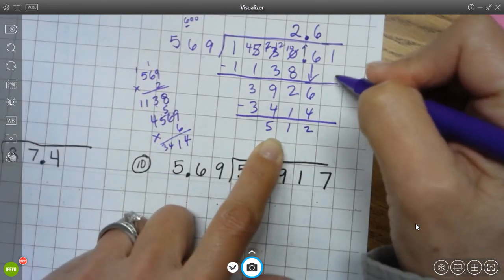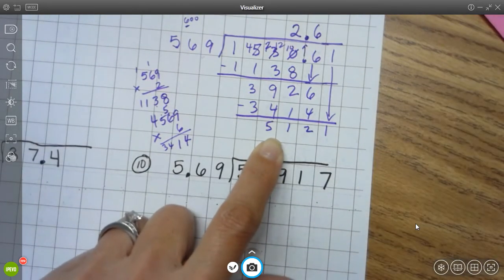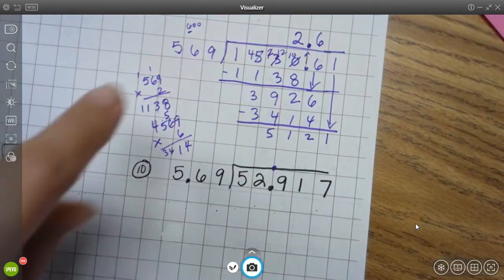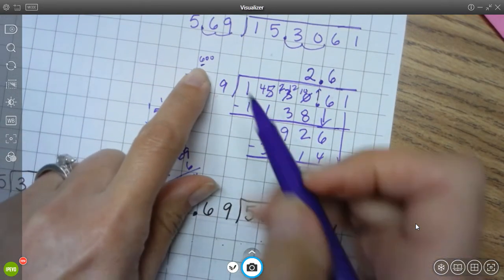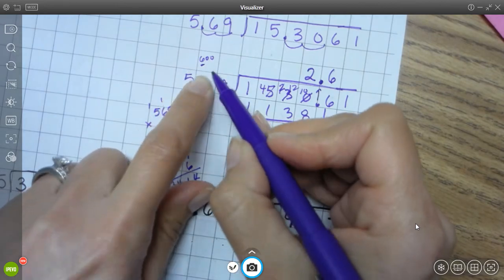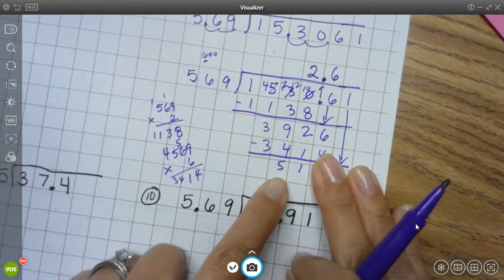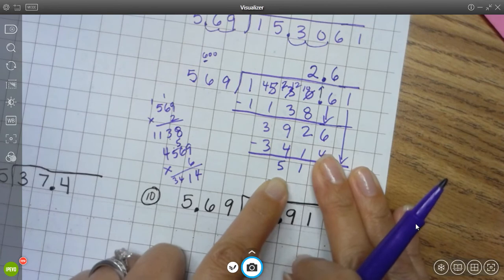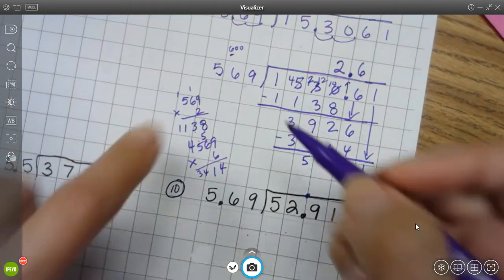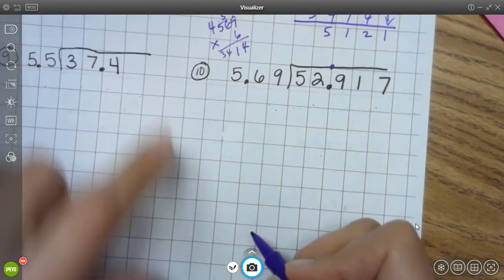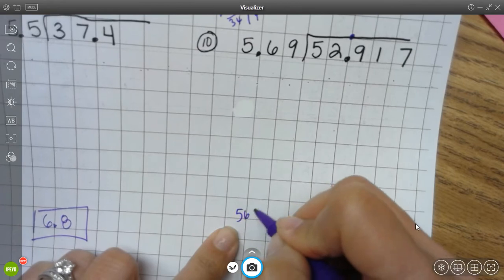All right, I'm going to bring down my last number, which is the 1. Now, that's a big number, 5,121. So, I'm going to go back here to compatible numbers. This is about 600. 6 goes into 51. How many times? So, 6 times 7 is 42. 6 times 8 is 48. So, I'm thinking an 8. Let's try it. So, let's see. I'm going to go down here. 569 times 8.